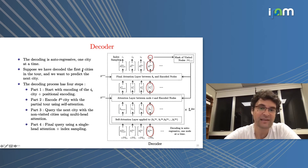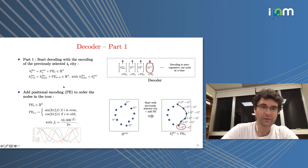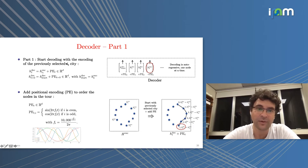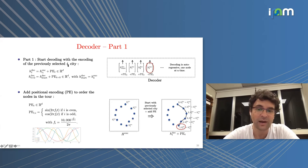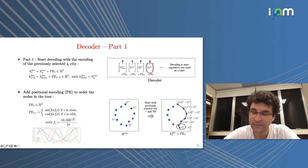Suppose we have decoded the first t cities in the tour and want to predict city t+1. Decoding is decomposed into four steps. For the first step, we start with the city from the previous iteration — say index i_t — and take the encoder representation of city i_t as the decoder input. To remember the order of cities, we apply positional encoding; here we use the standard Transformer positional encoding with sinusoidal functions independent of sequence size.